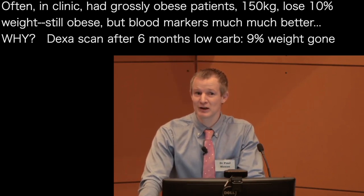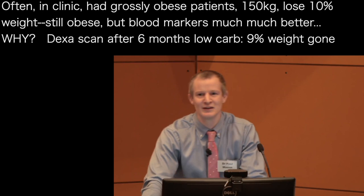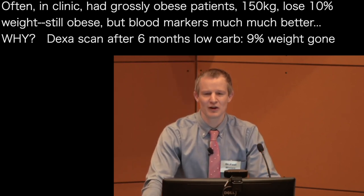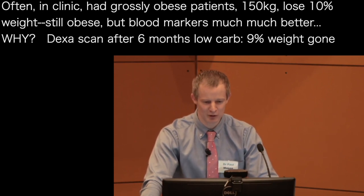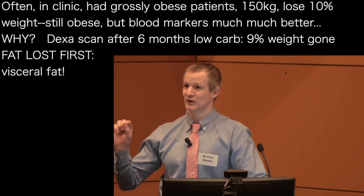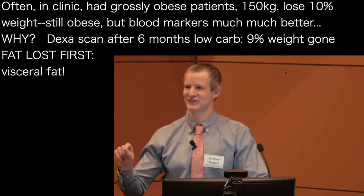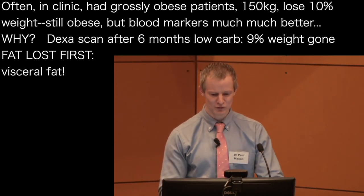I was always impressed in the clinic when people would come in morbidly obese — sometimes 130, 140, 150, 160 kilograms — and they'd lose maybe 10 percent of their body weight. They'd still be grossly overweight, but their blood tests looked very, very good. This is why: this is a DEXA scan of that same patient. You can see the fat around the viscera here. A repeat scan six months later, after only about nine percent weight loss, shows the visceral fat has all but dissolved. The fat you lose first on a ketogenic diet is the bad stuff. This is magnificent — a very modest degree of weight loss is going to be beneficial for your health.